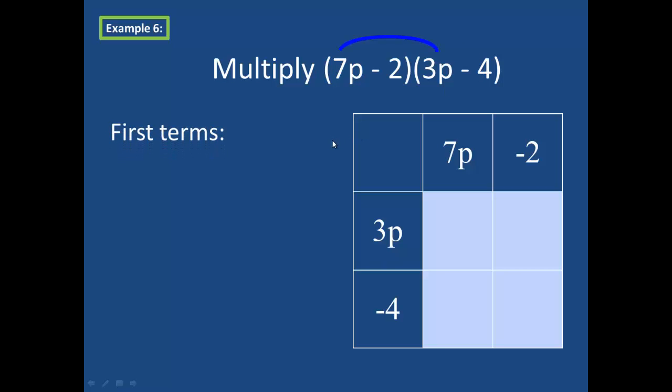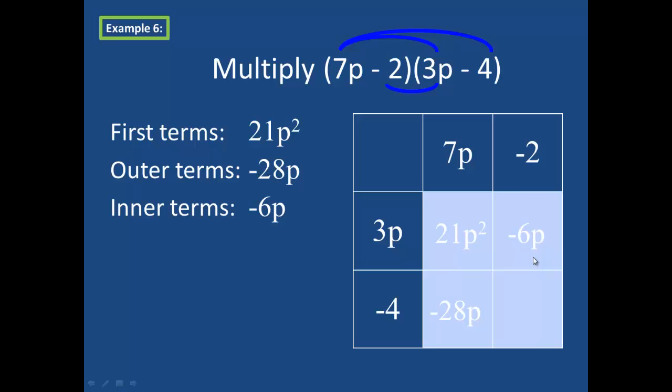So I get 21p squared. Next is going to be 7p times negative 4. That's my outer term, negative 28p. The inner term's negative 2 times 3p gives me negative 6p.